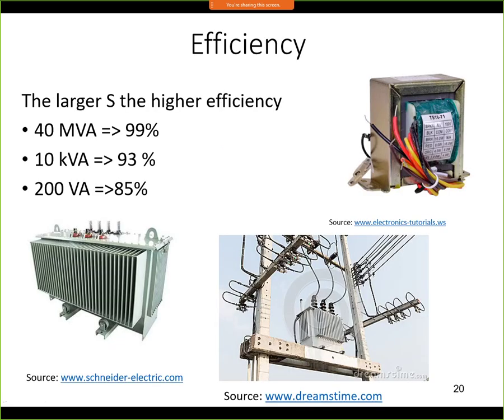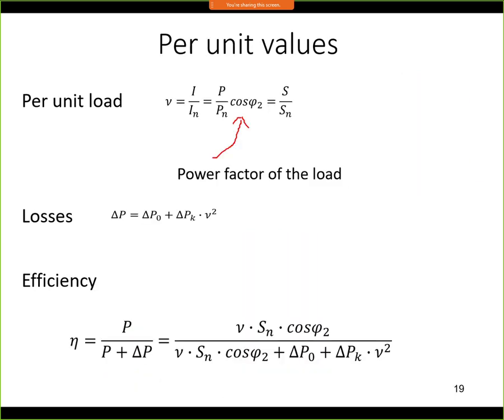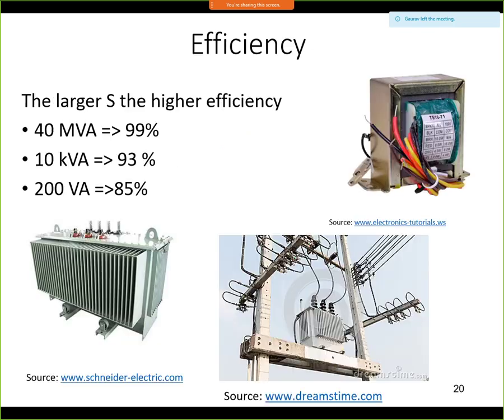The efficiency of a transformer is very high and increases with larger apparent power. Very large transformers of about 40 megavolt-amperes achieve approximately 99% efficiency. Small transformers of about 10 kilovolt-amperes have around 93% efficiency. Small transformers found in home appliances at 50 to 100 watts may have efficiency of only about 80 to 85%.